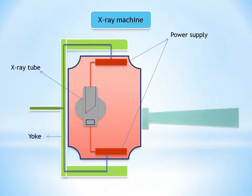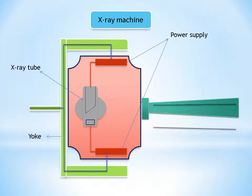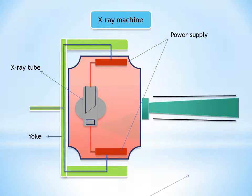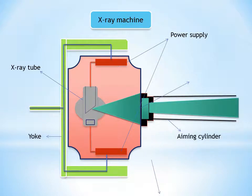Photons that are of such low energy that they cannot reach the receptor contribute to patient exposure or risk but do not offer any benefit. Consequently to reduce patient dose such low energy photons should be removed from the beam. This can be accomplished in part by placing an aluminum filter in the path of the beam. An aluminum filter preferentially removes many of the low energy photons with lesser effect on the high energy photons that are able to contribute to making an image.